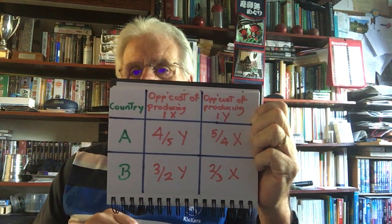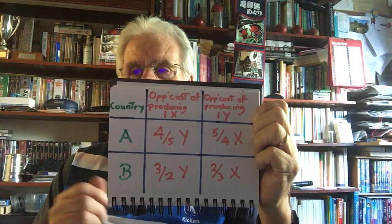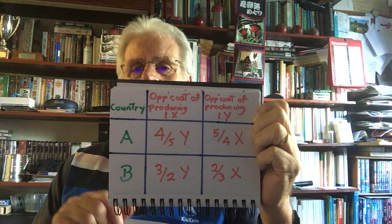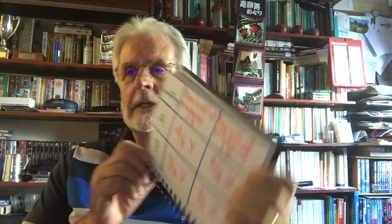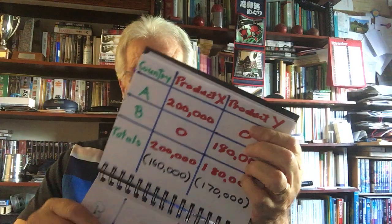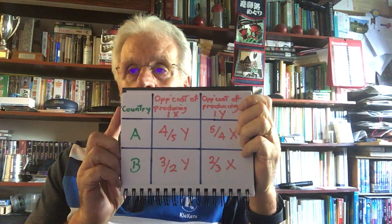Absolute advantage is easy to understand — and in exams we're not really testing that. But comparative advantage is not so easy, so you need to follow this one slowly and carefully. If we change the numbers slightly, we can move into the more important and interesting case.